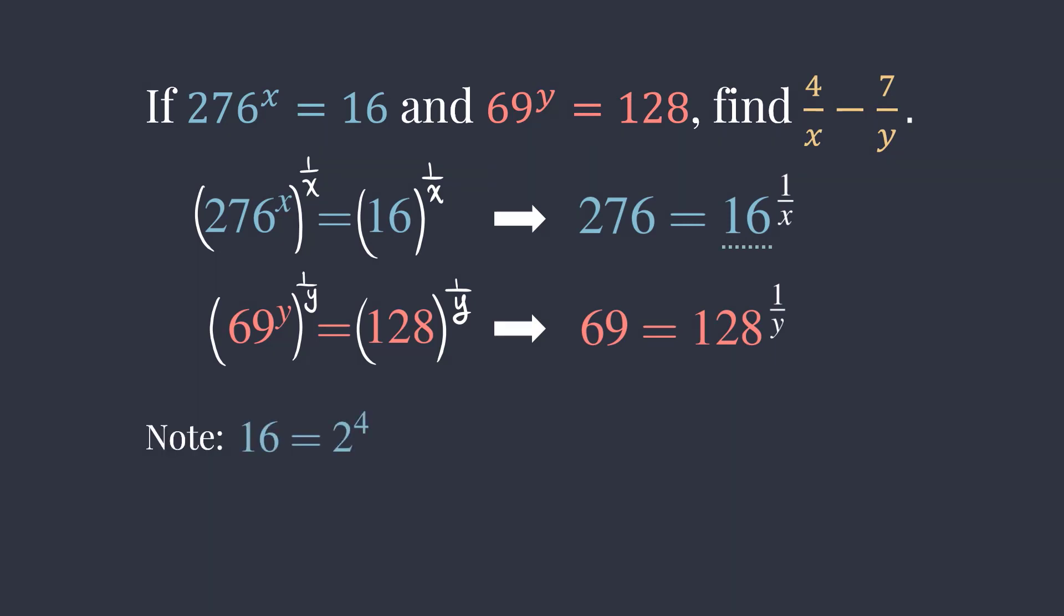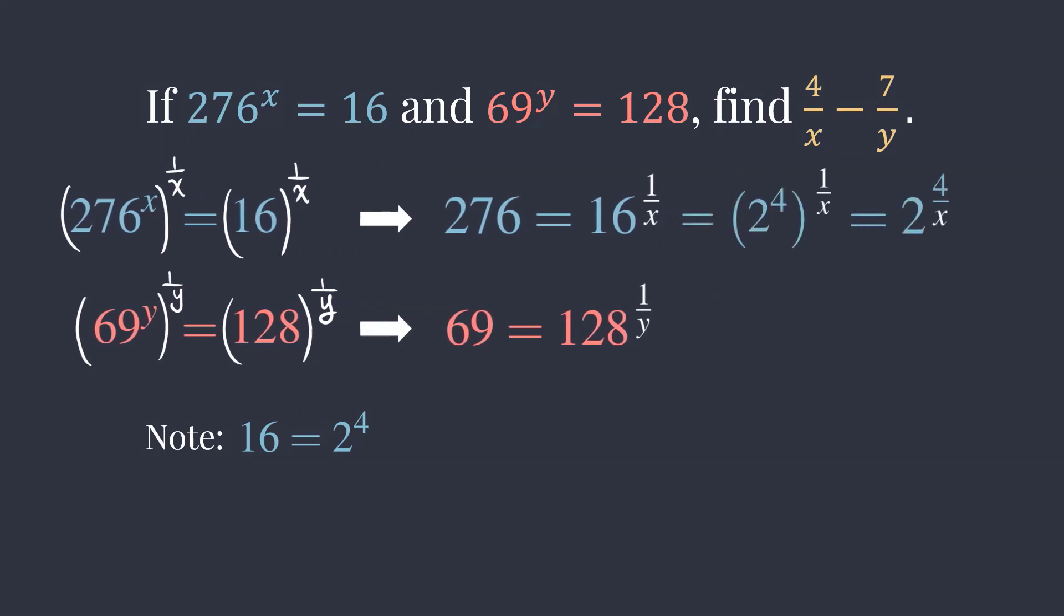Since 16 is 2 to the 4th power, we can write 16 to the 1 over x as 2 to the 4th power, with an outside exponent of 1 over x, which becomes 2 to the 4 over x.